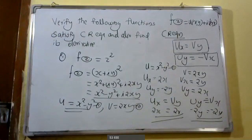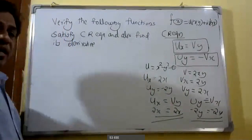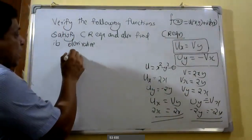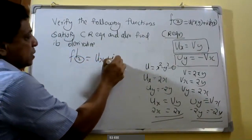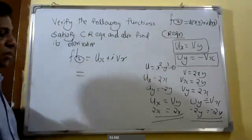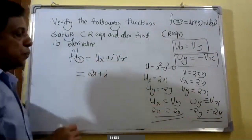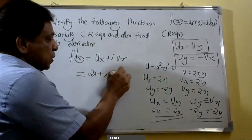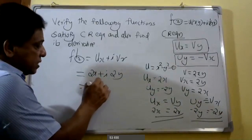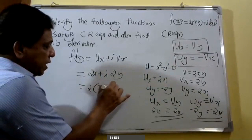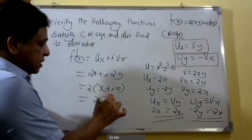Here we also find the derivative. To find the derivative, we use the formula f dash equals u_x plus i v_x. We know that u_x equals 2x. Substituting: 2x plus i into v_x, which equals 2y, giving us 2x plus i times 2y. Taking 2 outside, we get 2 times x plus i y, which is 2 times z.